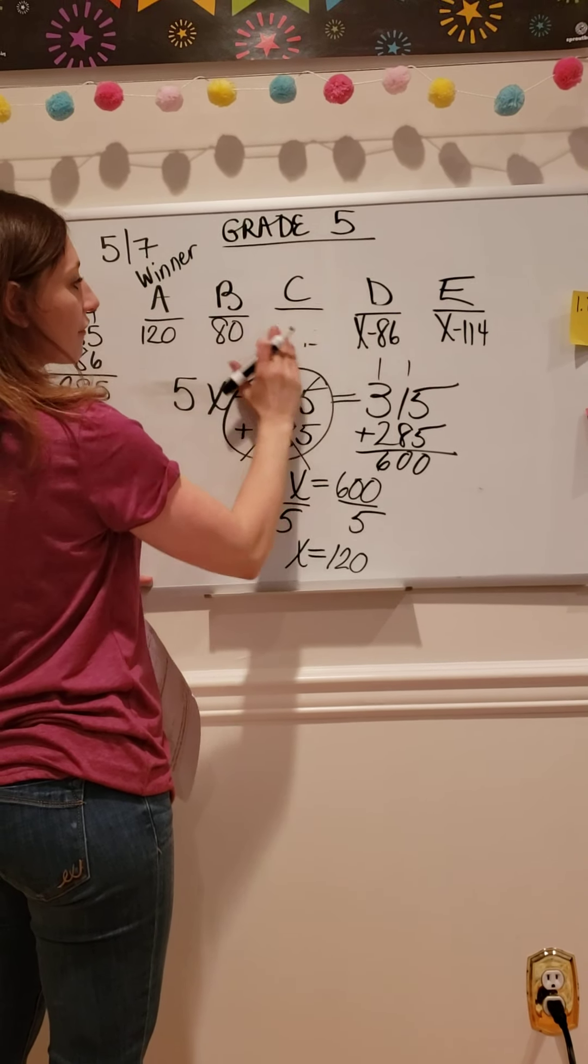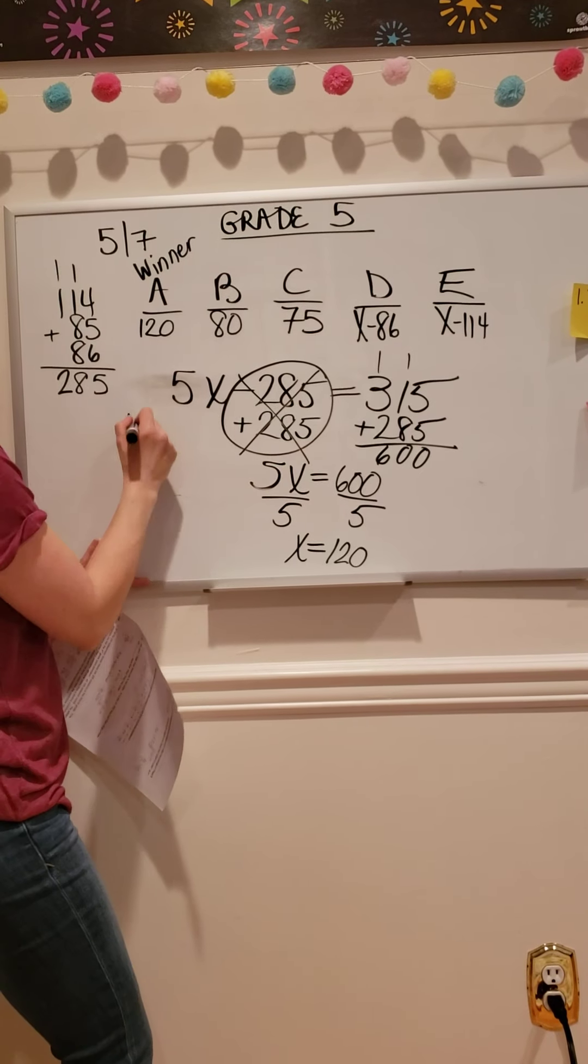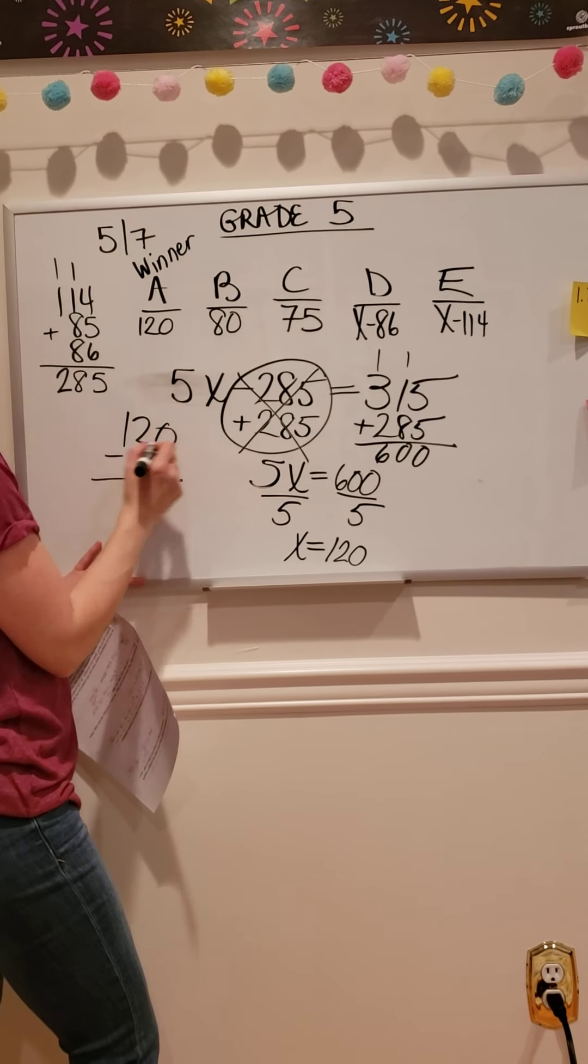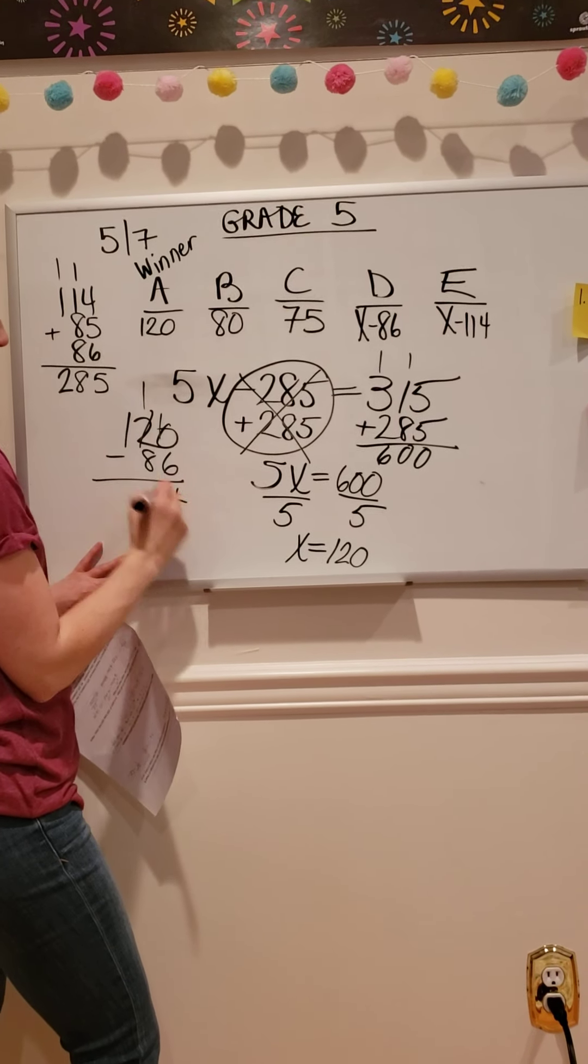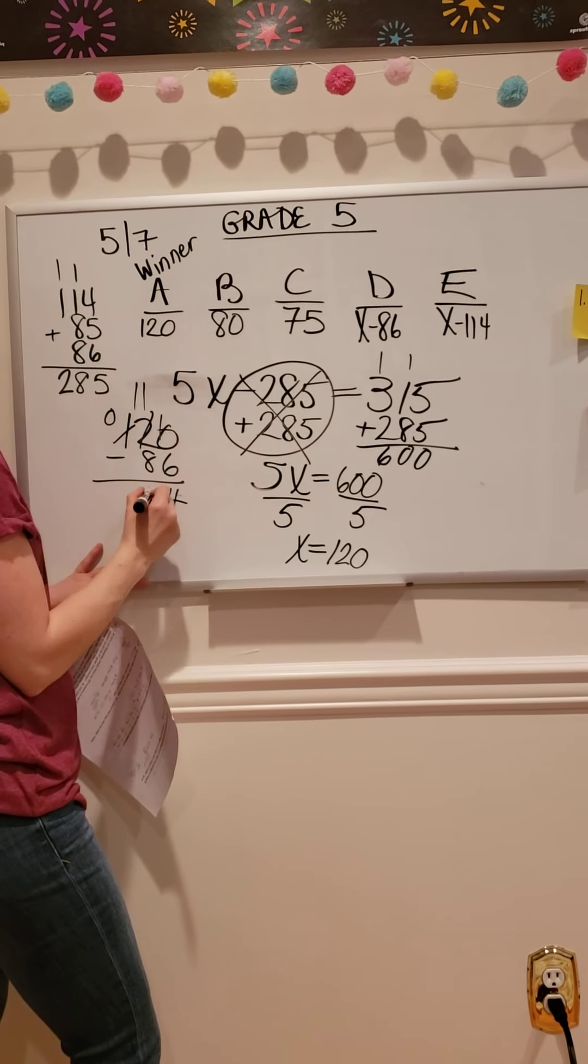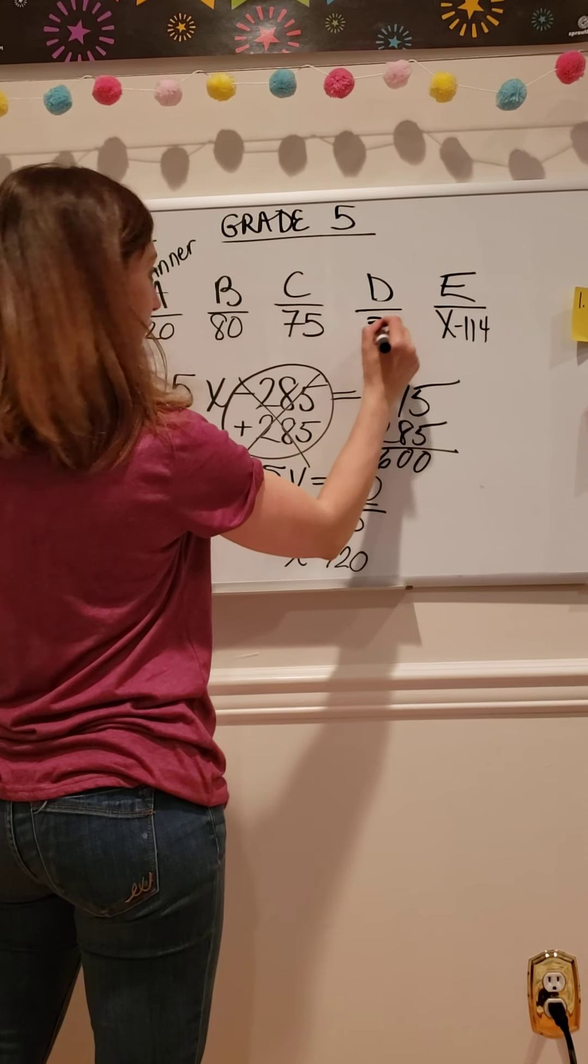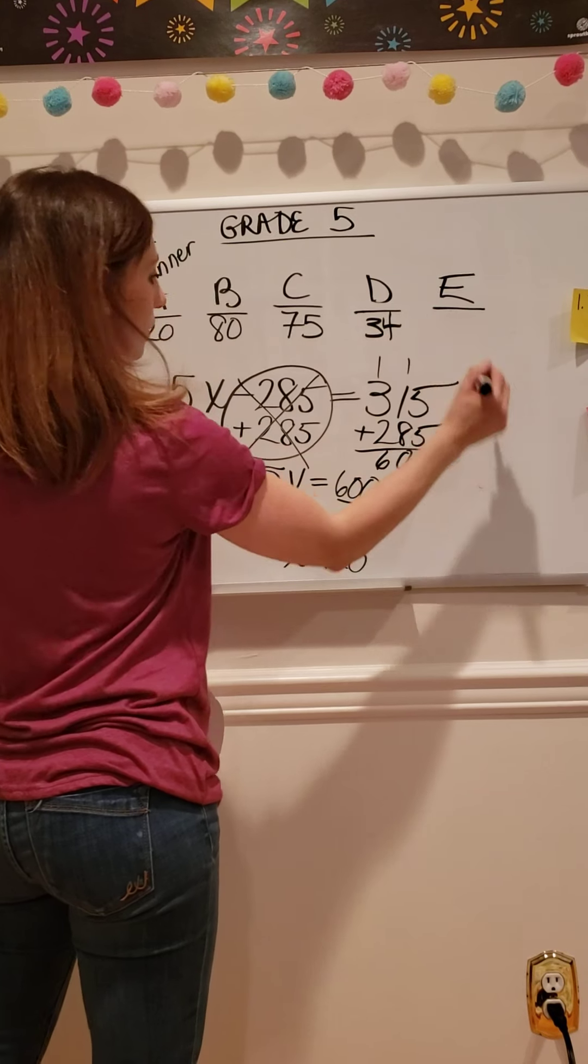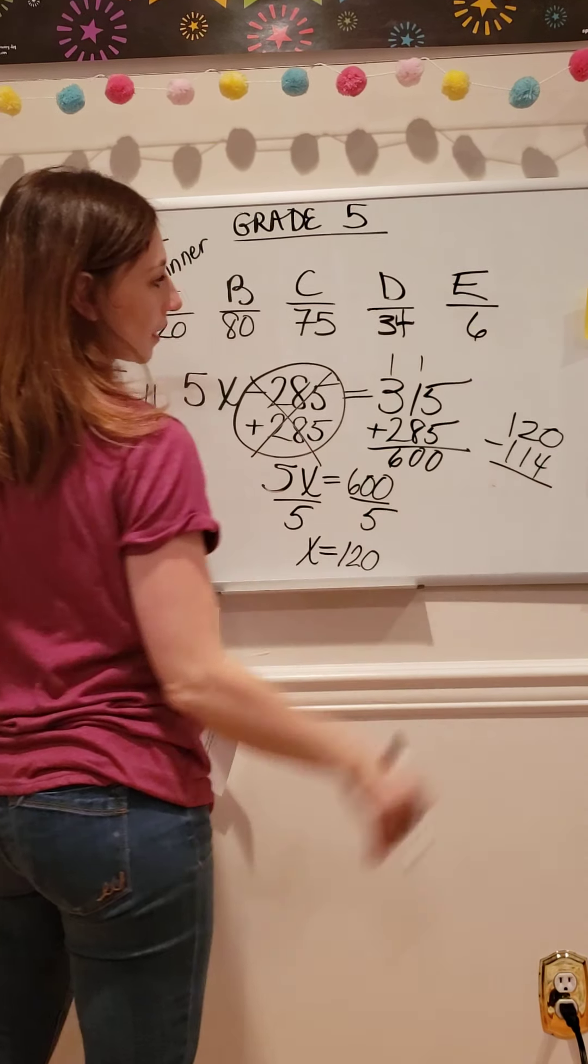120 minus 45, that person got 75. 120 minus 86, 0 minus 6 I can't do. Cross it with the 2, make it a 1. 10 minus 6 is 4. Borrow again. 11 minus 8 is 3. So this person got 34 votes. And last but not least, 120 minus 114 would be this person got 6 votes.